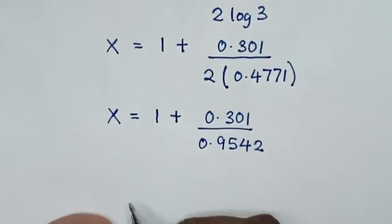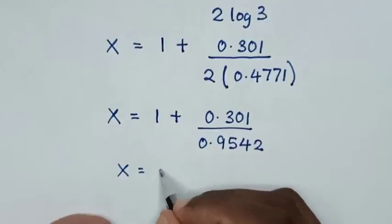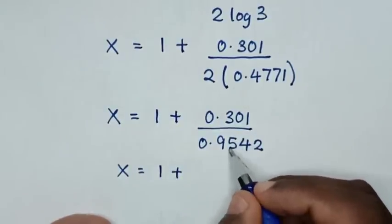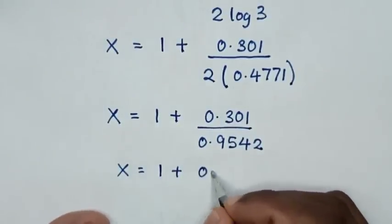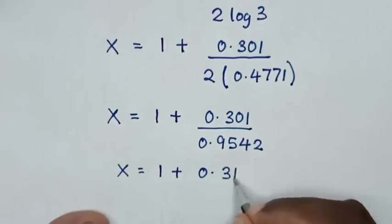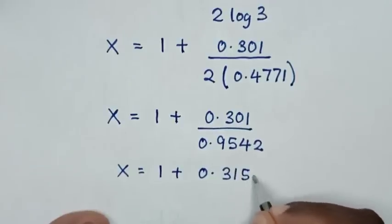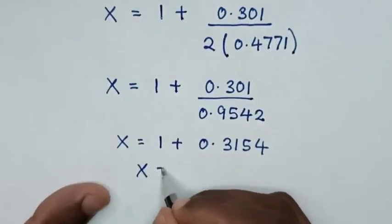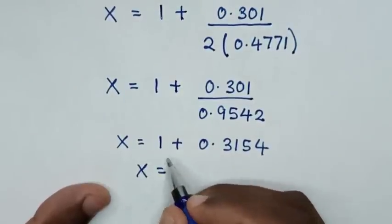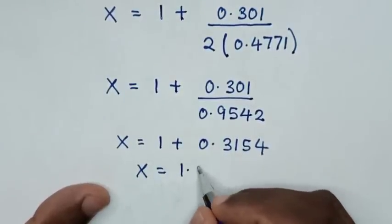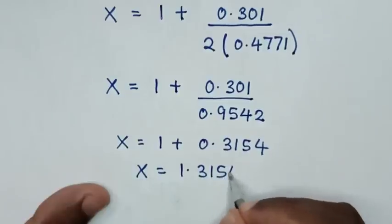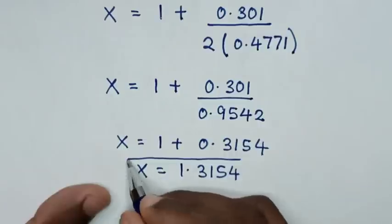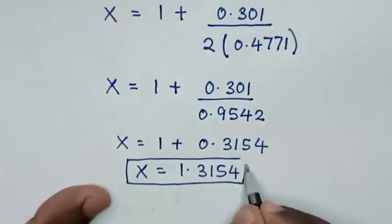Then it will be x is equal to 1 plus 0.301 divided by 0.9542, which gives 0.3154. Then x will be equal to 1 plus 0.3154, which is 1.3154. So this is our final answer for the value of x in this problem.